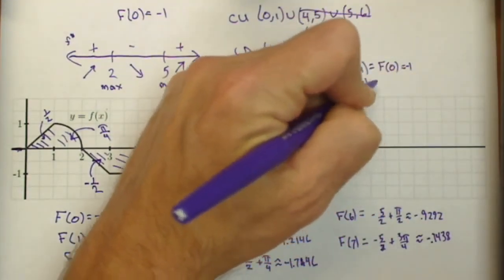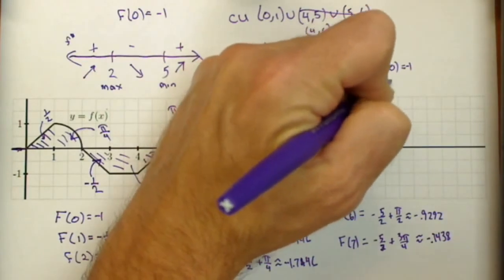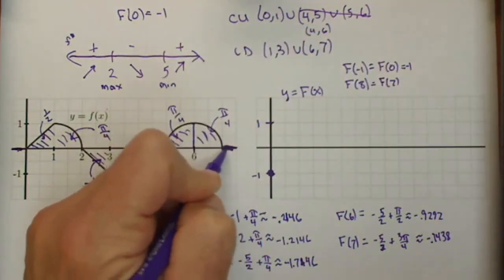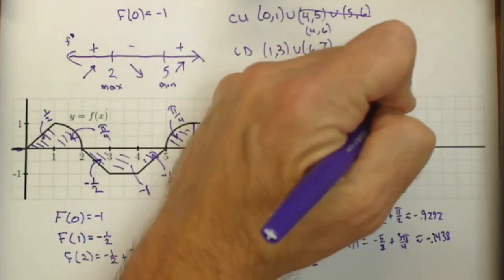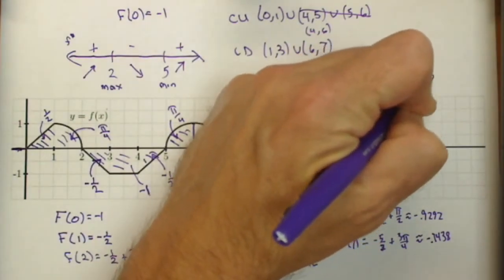f of 8 is going to be the same as f of 7 because there's no change between 7 and 8. We're not moving anywhere. So it's going to be that negative 5 halves plus 3 pi over 4.